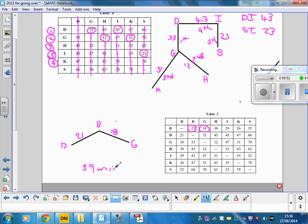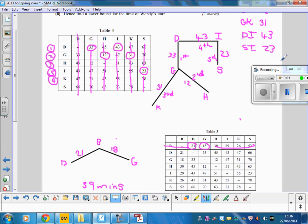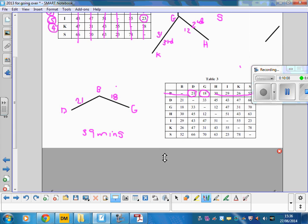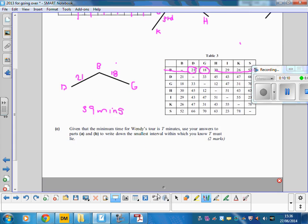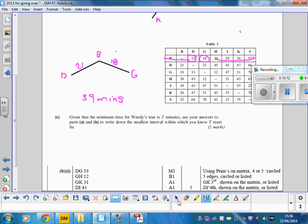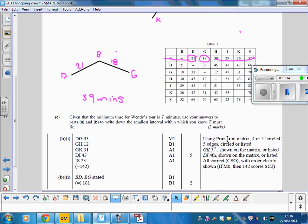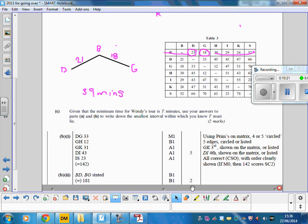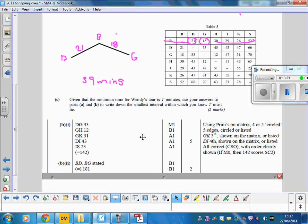So that means that your lower bound, you'll be adding the two shortest edges from the vertex that they got rid of, the B, and the total length of your spanning tree, which was 142. And if you add those together, we'll see what they had in the mark scheme there. So you've got your 142, adding the 39 gives you 181. And you can see the way that they've marked that there.